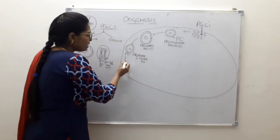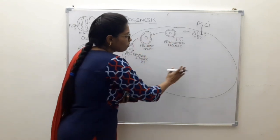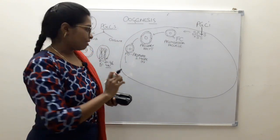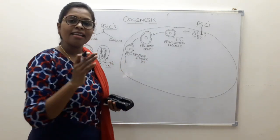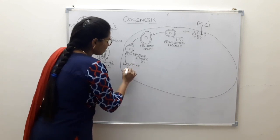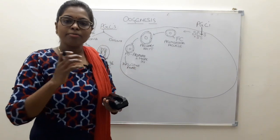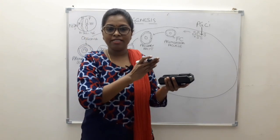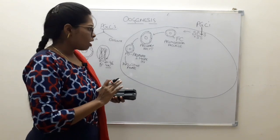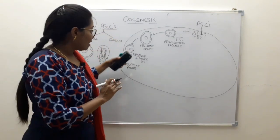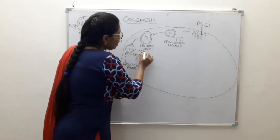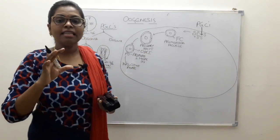Immediately after birth, if you see the ovary of a female baby, in the cortex there are many follicles. All the follicles, from the prophase of the first meiotic division, have entered a resting phase called the diplotene stage. The follicular cells secrete the oocyte maturation inhibitor, which inhibits the completion of the first meiotic division.